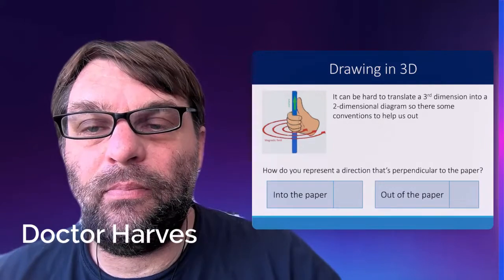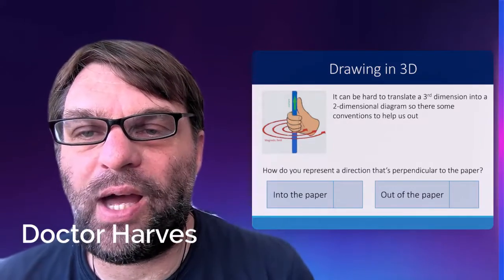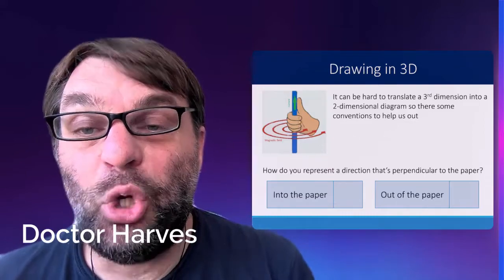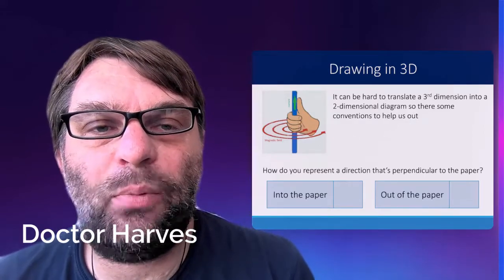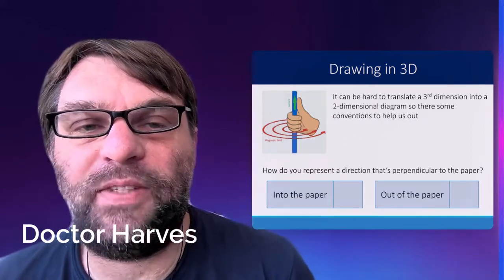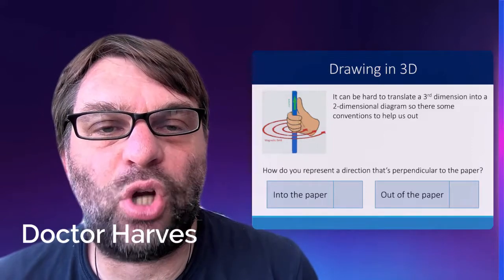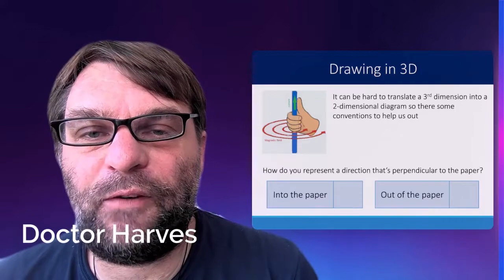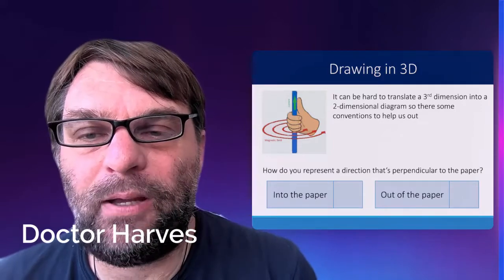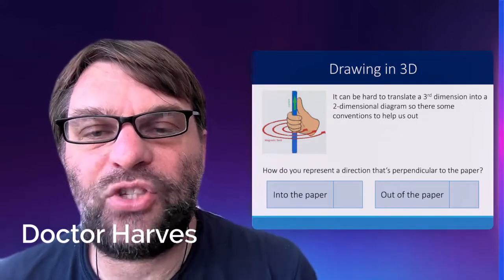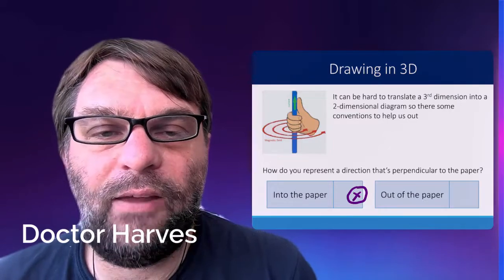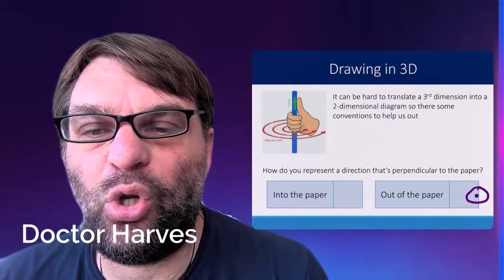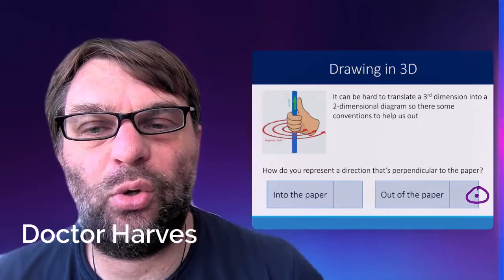In terms of exams, obviously you are in a paper situation. Paper is two dimensions, so we have to be able to translate that third dimension of depth into a two-dimensional diagram, so we have some conventions. If the magnetic field line is going into the paper, away from you, then that's a cross, and if it is going out of the paper towards you, then that's seen as a circle with a dot.